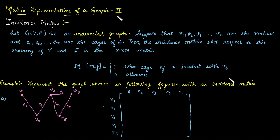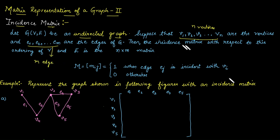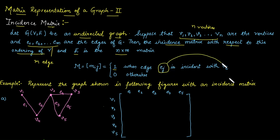Matrix representation of a graph, part 2: Incidence matrix. Let's take an undirected graph and suppose there are n vertices v1, v2, v3 up to vn, and there are m edges in a graph G. The incidence matrix with respect to the ordering of v and e is a matrix of order n cross m, where the entries are 1 and 0. A 1 indicates that the jth edge is incident with the ith vertex; otherwise the entry is 0.